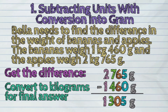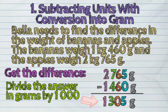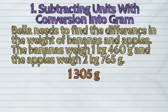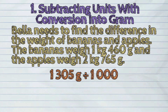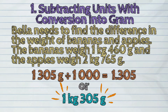Let us now convert this into kilograms for our final answer. We can do this by dividing the answer in grams by 1,000. So, 1,305 grams divided by 1,000 is 1.305, or 1 kilogram and 305 grams.